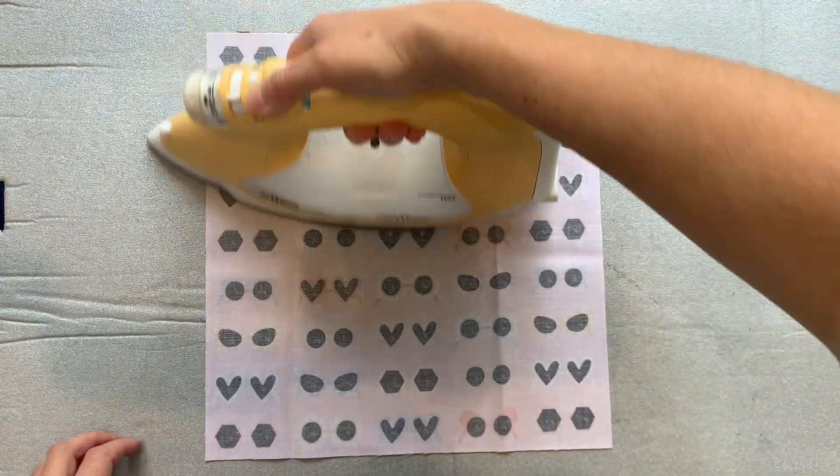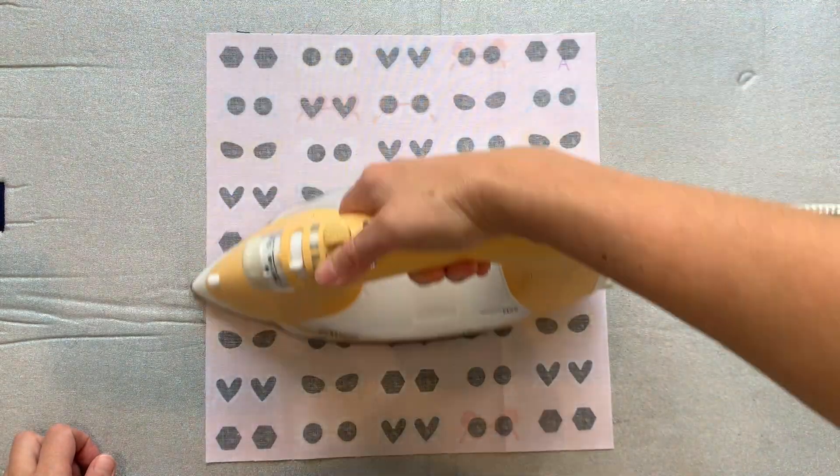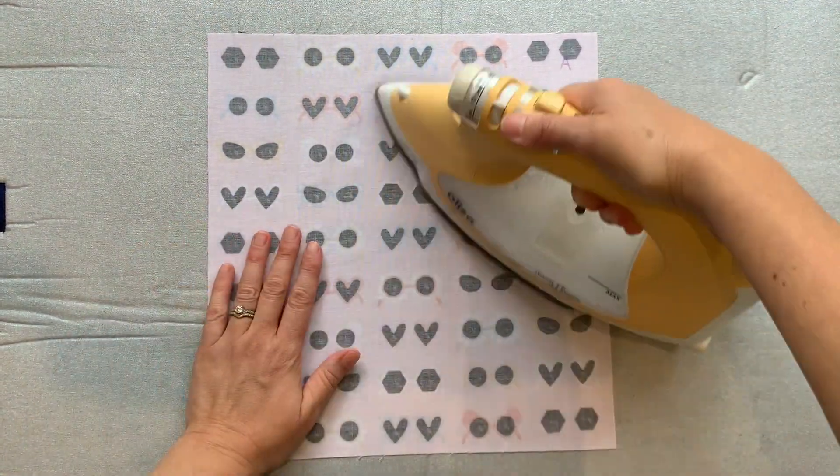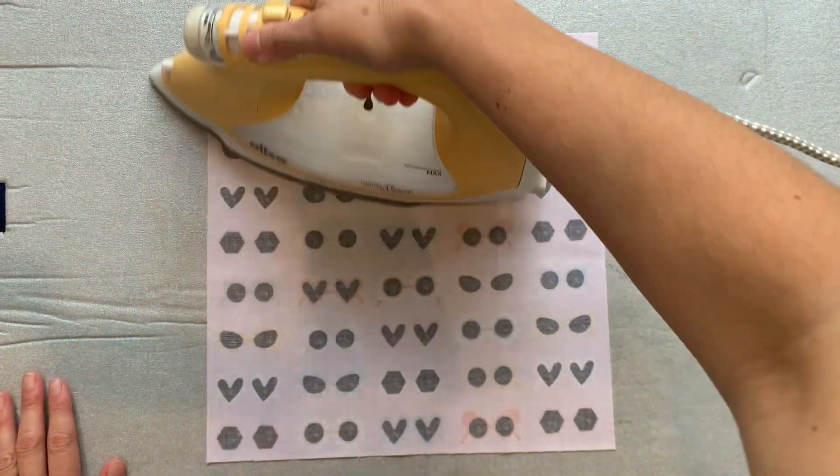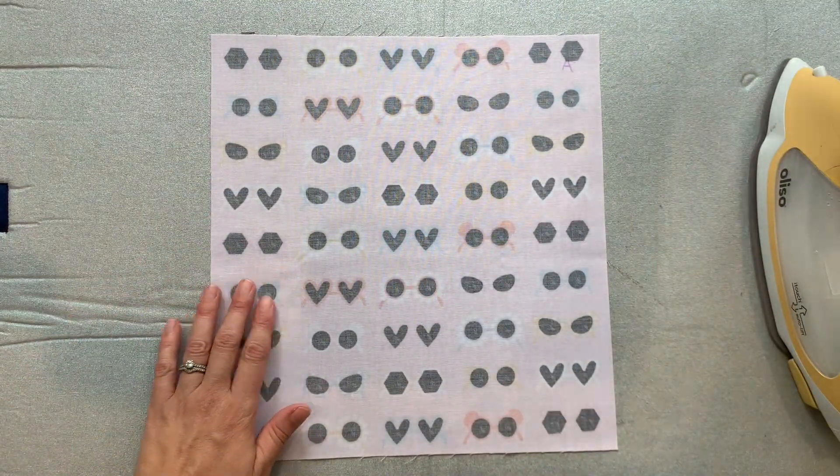First of all, let's take the main fabric piece. This is the bit that will sit on the outside of your wallet. Give that a press. That's piece A.